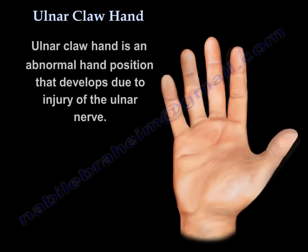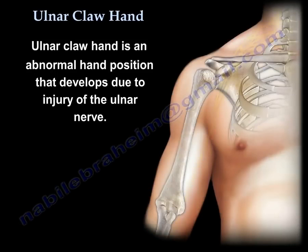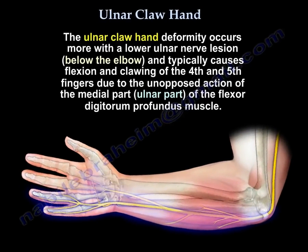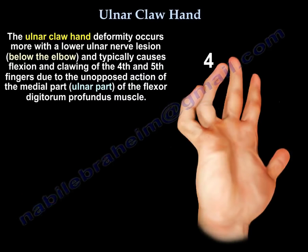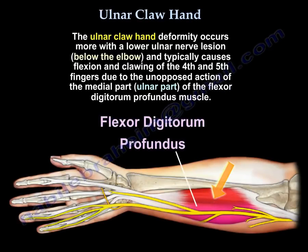Claw hand, also called ulnar claw hand, is an abnormal position that develops due to injury of the ulnar nerve. The claw hand occurs more with a low ulnar nerve lesion, typically causing flexion and clawing of the fourth and fifth fingers due to the unopposed action of the medial or ulnar part of the flexor digitorum profundus muscle.